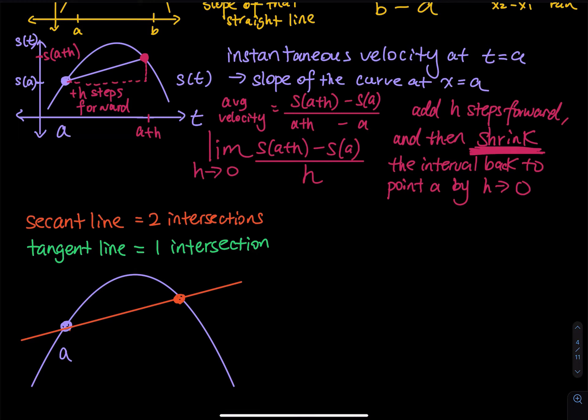That leads to two keywords that are so important in differential calculus: the secant line and the tangent line. Secant means crossing — a straight line that crosses the graph or curve two times, exactly two intersections. Secant means crossing; tangent means touching.